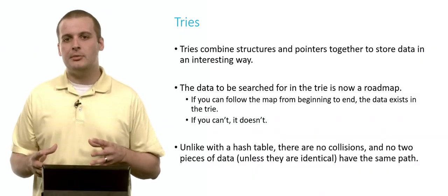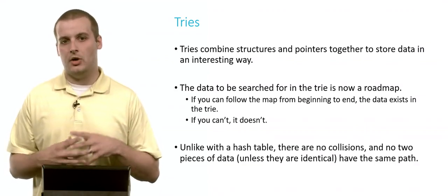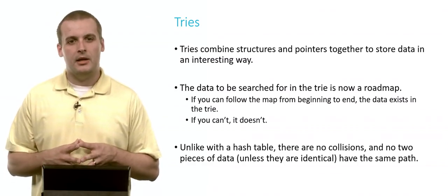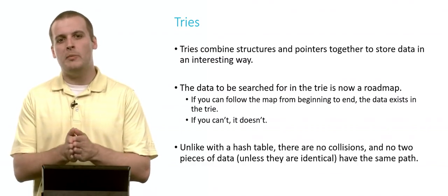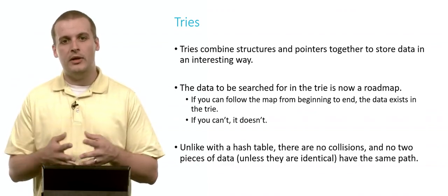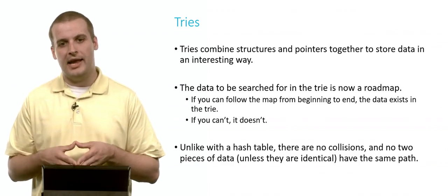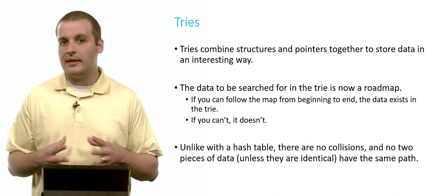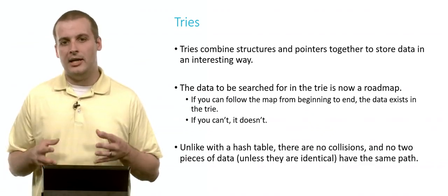So tries, similar to hash tables which combine arrays and linked lists, tries combine arrays, structures, and pointers together to store data in an interesting way. We use the data as a roadmap to navigate this data structure. And if we can follow the roadmap from beginning to end, we'll know whether that data exists in the trie. The keys here are guaranteed to be unique. And so unlike a hash table, we'll never have to deal with collisions. No two pieces of data have exactly the same roadmap unless that data is identical.